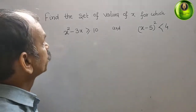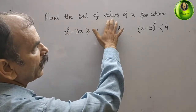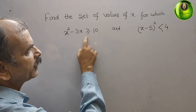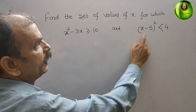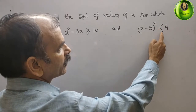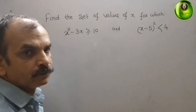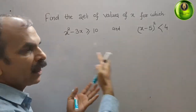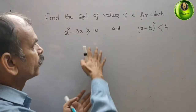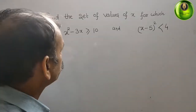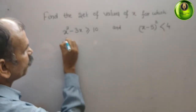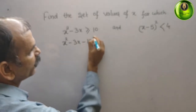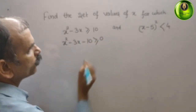The question is: find the set of values of x for which x squared minus 3x is greater than or equal to 10, and x minus 5 whole square is less than 4. First, we bring terms to the left side, giving us x squared minus 3x minus 10 is greater than or equal to 0.